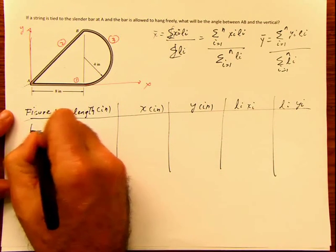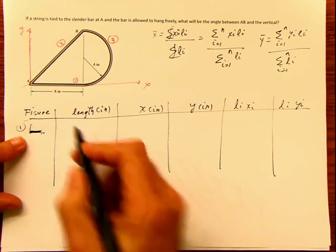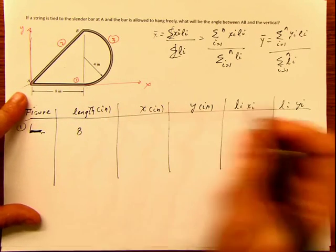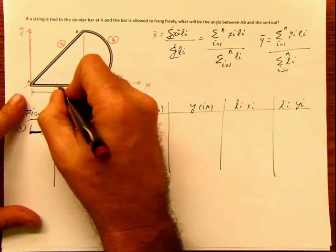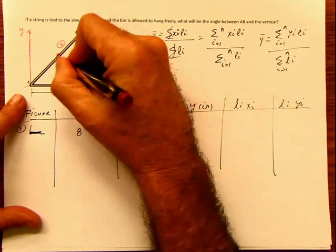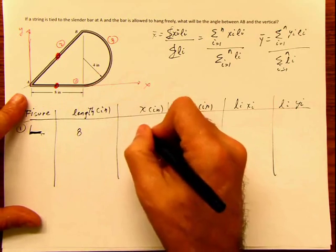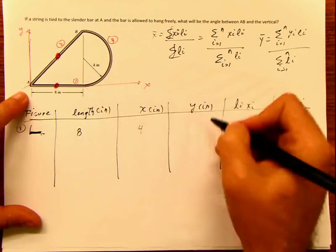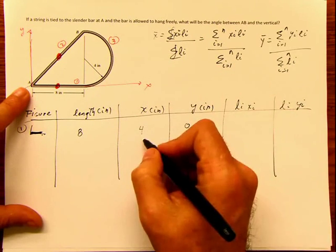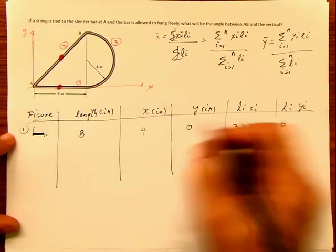Figure 1 is this line here. The length given is 8. The centroid of that one is exactly at the center. So x is going to be 4, and y is 0 because it's exactly over the x-axis. Then l_i * x_i is 8 times 4 equals 32, and l_i * y_i is 8 times 0 equals 0. First figure done.